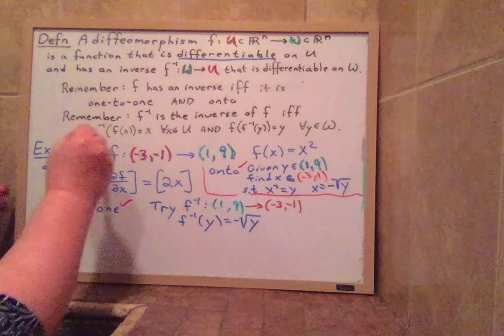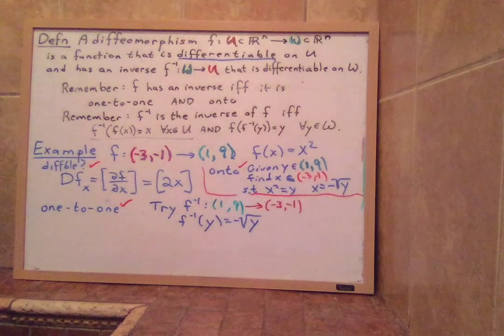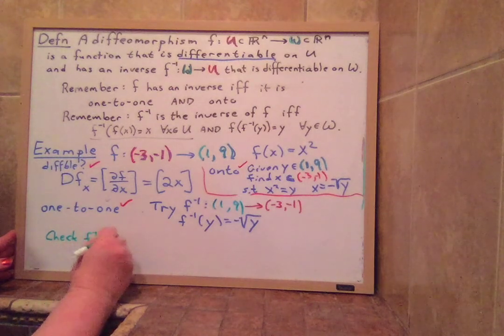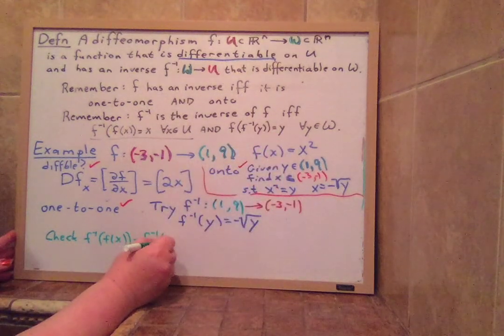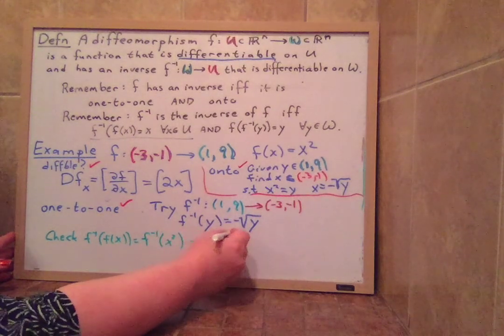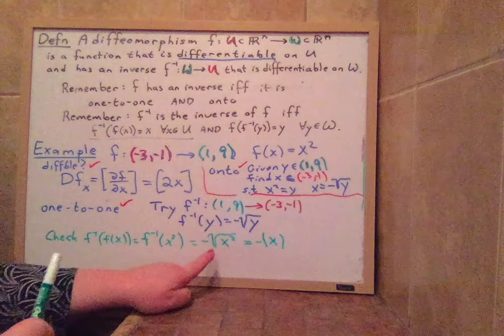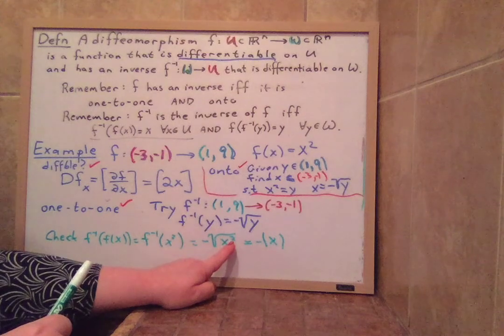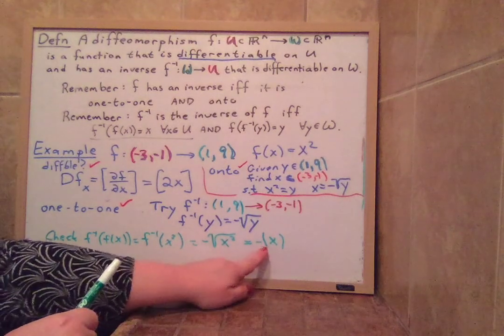First, we have to check this. So we check F inverse of F of x. What is F of x? F of x is x squared. So we're asking F inverse of x squared. And what is F inverse? It's negative square root. So negative square root of x squared. This equals negative absolute value of x. The square root of x squared is absolute value of x because it takes x, whether it's positive or negative, it squares it. And then square root makes the positive square root. So that's like an absolute value. And we have a negative sign of one. So it's negative absolute value of x.